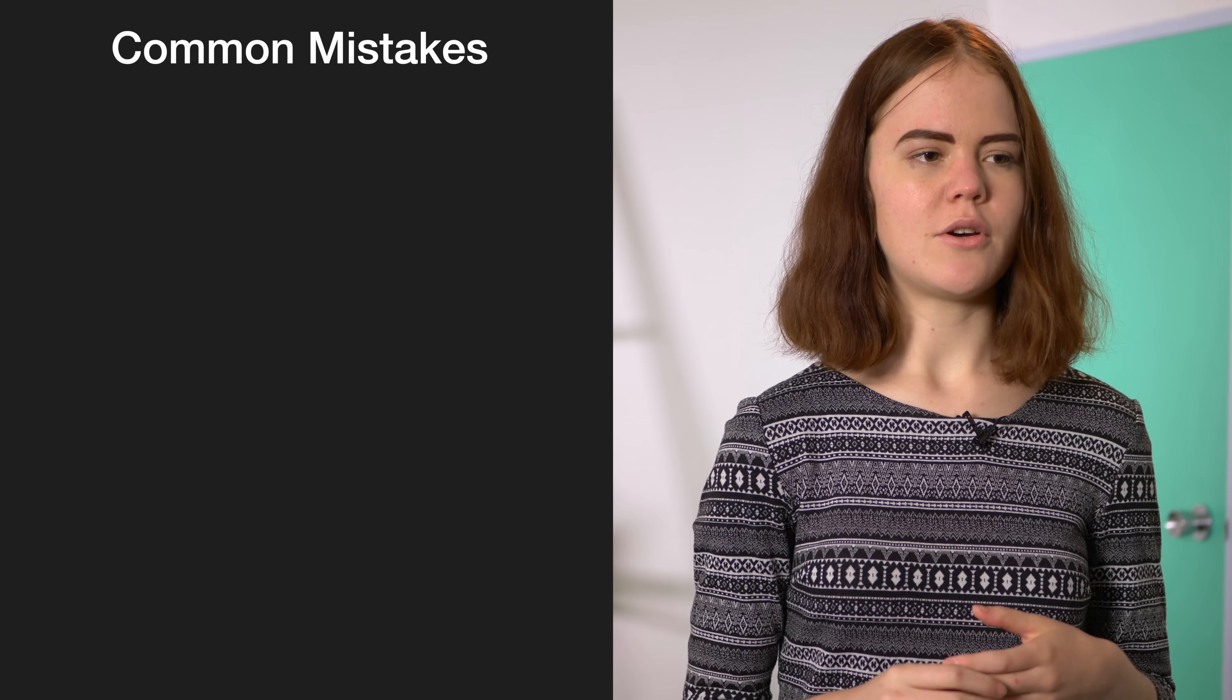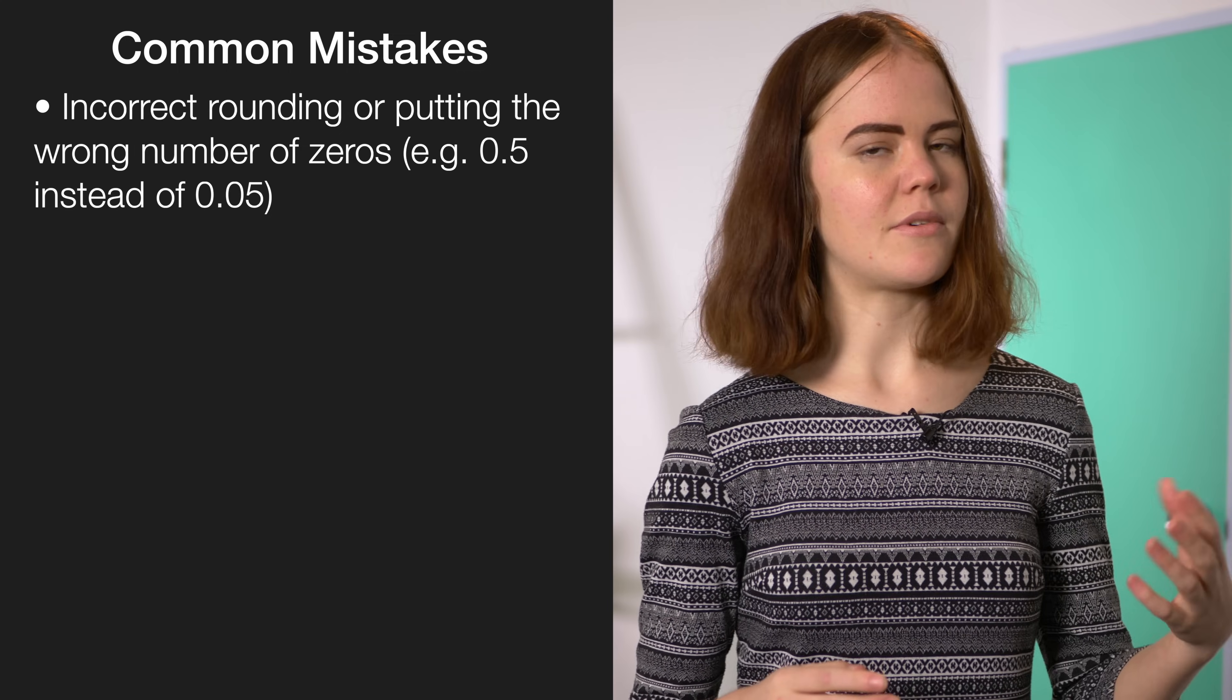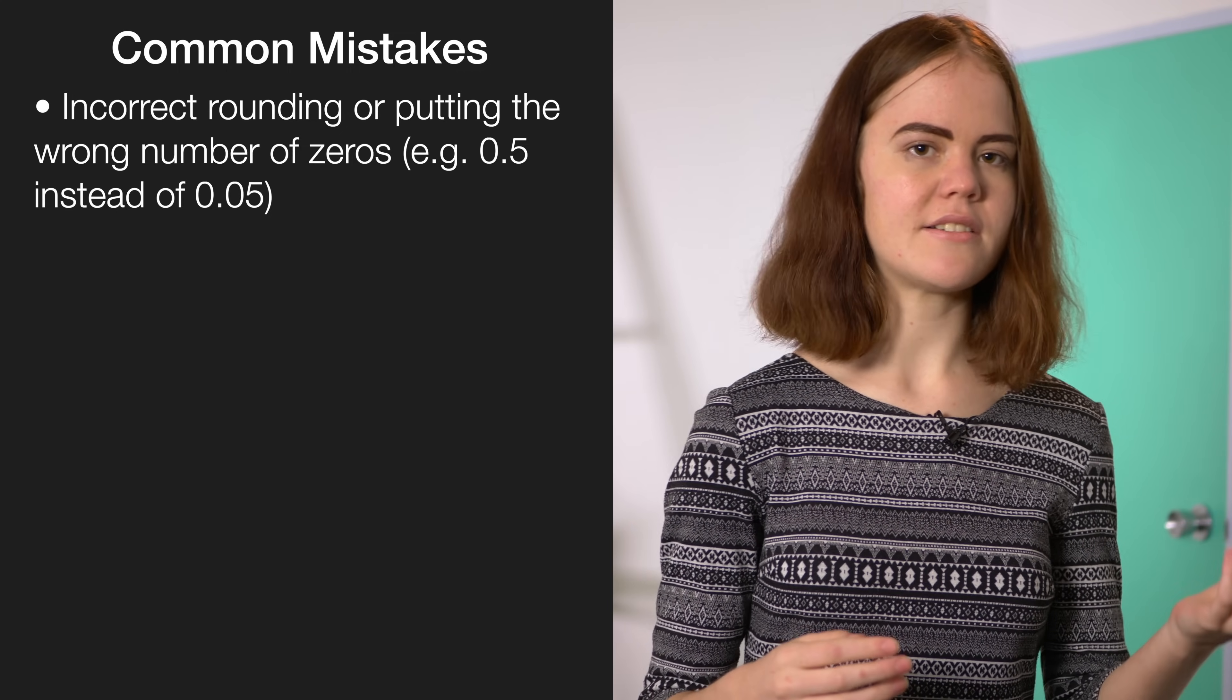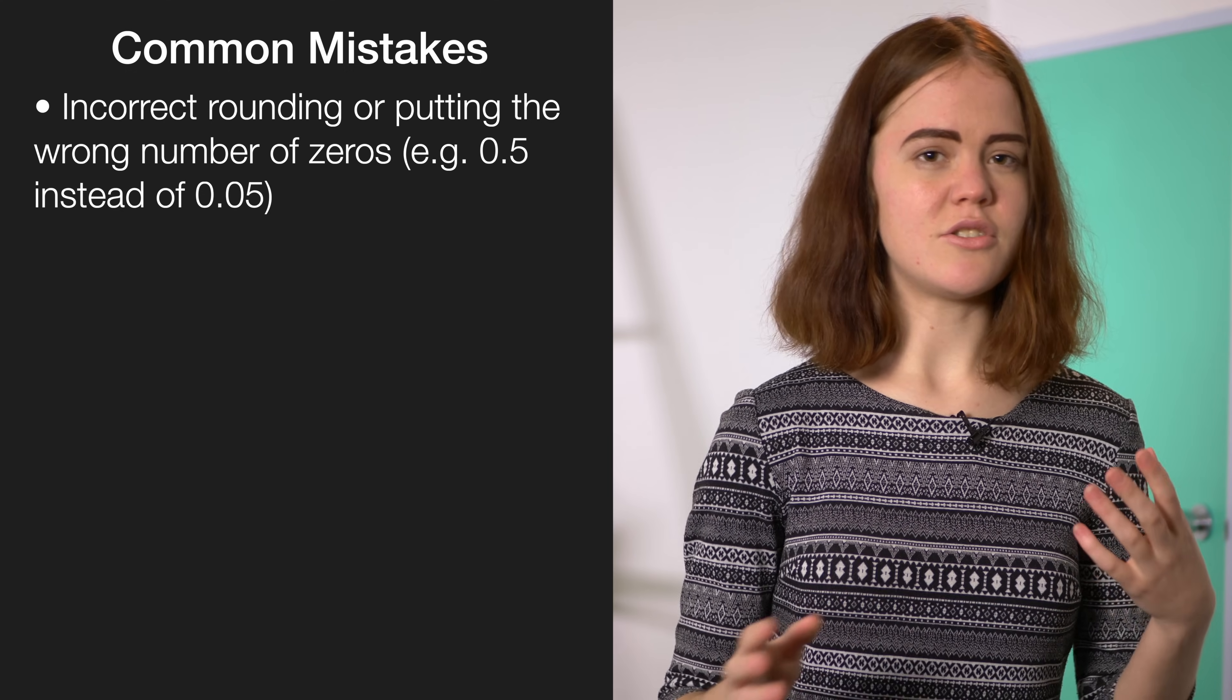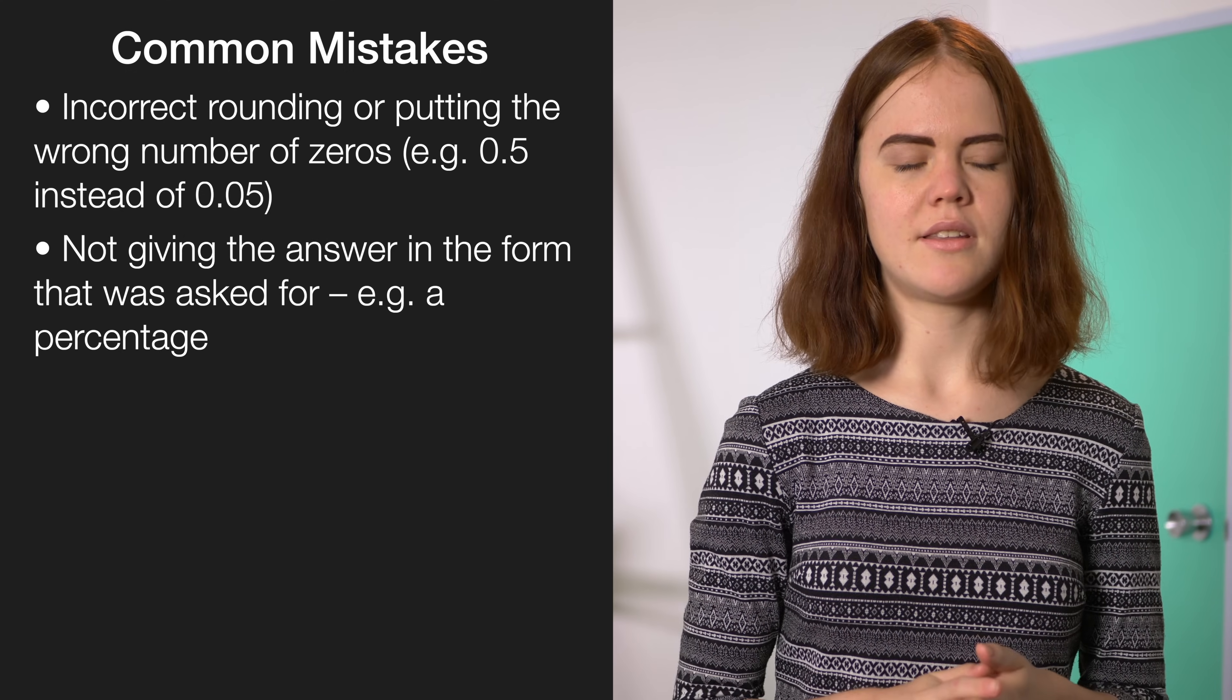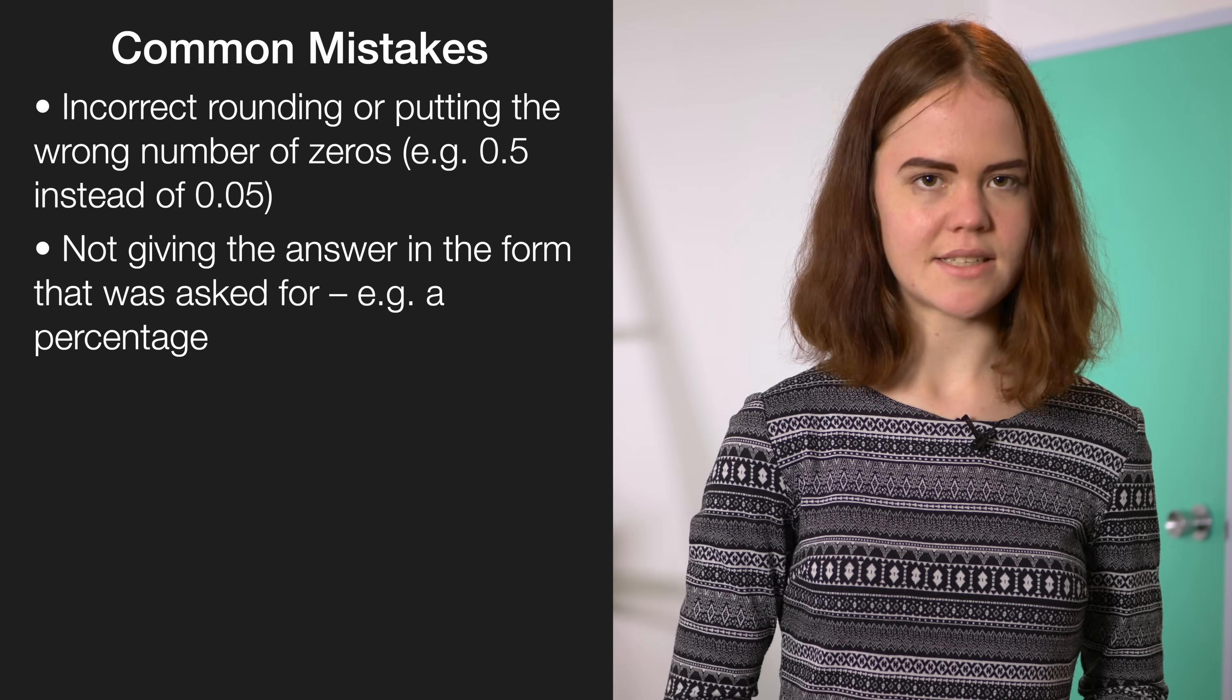Finally, there are some common mistakes to avoid on this paper. Students will often round their answers wrong or put the wrong number of zeros in a decimal. So, for example, writing 0.5 instead of 0.05. And the third common thing that we see is students not turning their answer into a percentage if the question asks for it. These are all really easy things to check for at the end of your exam to make sure you don't get penalised for silly mistakes.